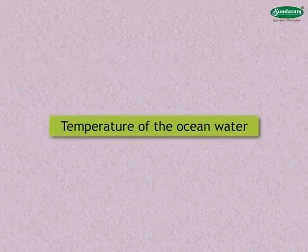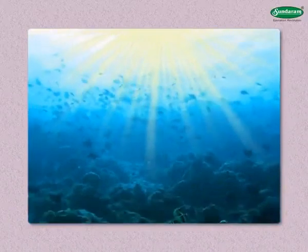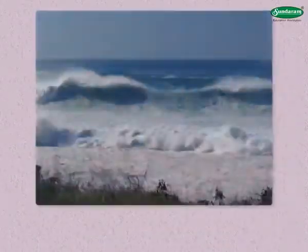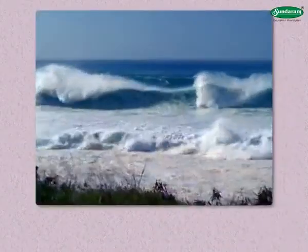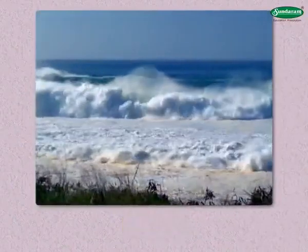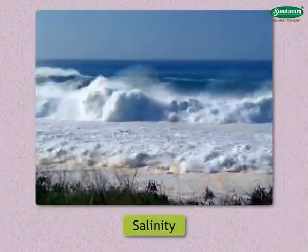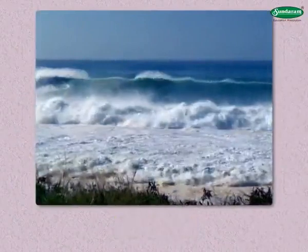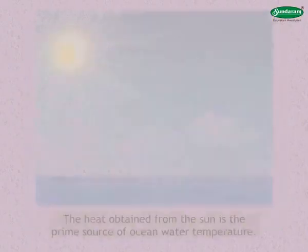Temperature is one of the important physical properties of ocean water. Other physical properties of ocean water, like density and salinity, as well as its movement, are influenced by its temperature. The life in the ocean also depends on it.